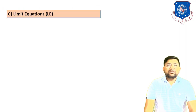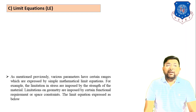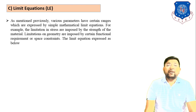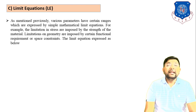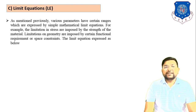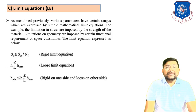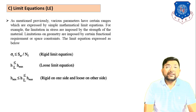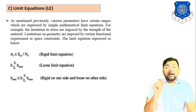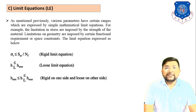The third type is the Limit Equation. Various parameters have certain ranges which are expressed by simple mathematical limit equations. For example, limitations on stress are imposed by the strength of the material. Limitations on geometry are imposed by functional or space requirements. The Rigid Limit Equation is expressed as: σ_T ≤ S_ut / N_F, where σ_T is tensile stress, S_ut is ultimate tensile strength, and N_F is the factor of safety.